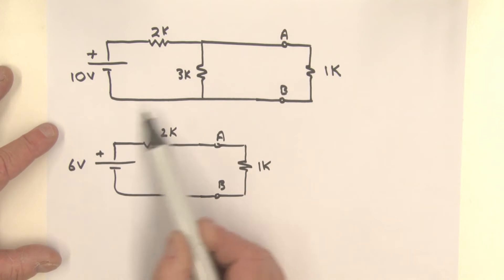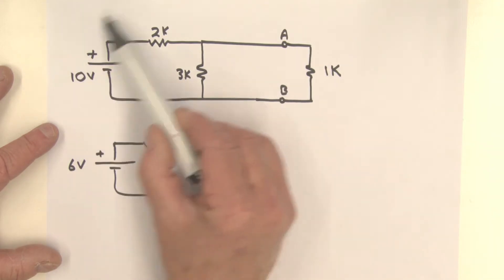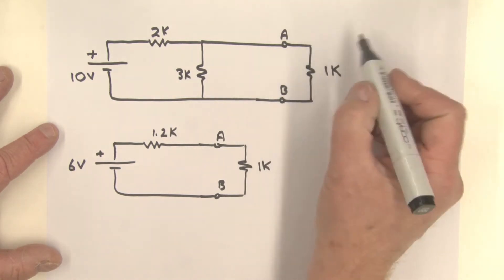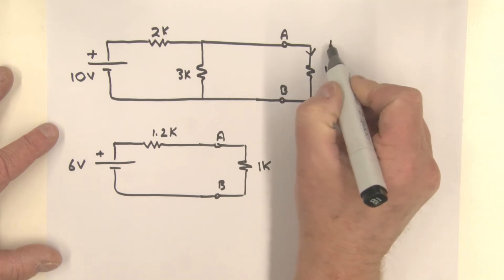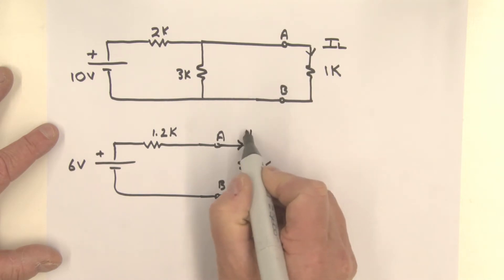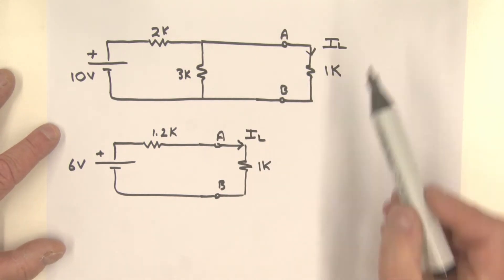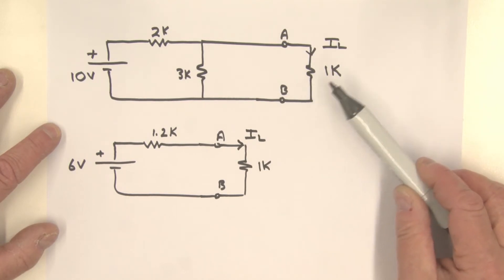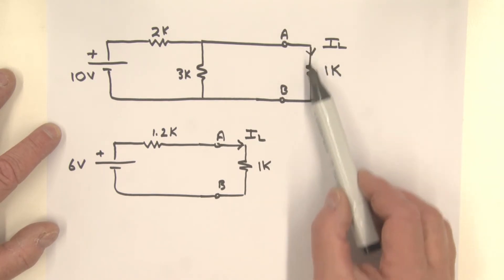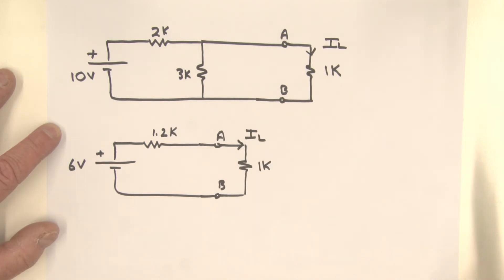This Thevenin circuit, as far as terminals A and B are concerned, is equivalent to the more complex original circuit — again, as far as terminals A and B are concerned. So if you need to calculate the current in the load resistance IL, you can calculate it in the Thevenin circuit with the load attached. These two values should be identical. Take a moment to verify that the same current flows through the load in both the original and Thevenin equivalent circuits.